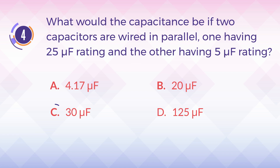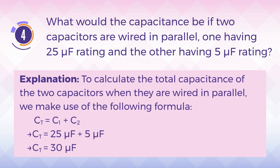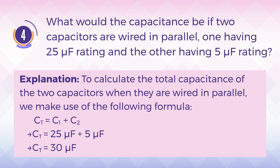The correct answer is C) 30 microfarad. Explanation: to calculate the total capacitance of two capacitors wired in parallel, we use the formula CT equals C1 plus C2. In this case CT equals 25 plus 5, giving a total capacitance of 30 microfarad.